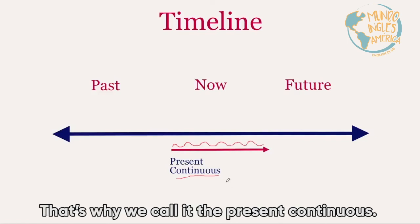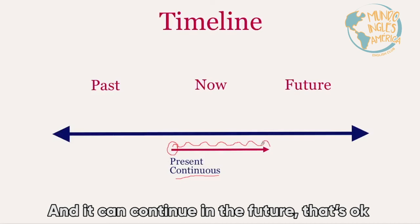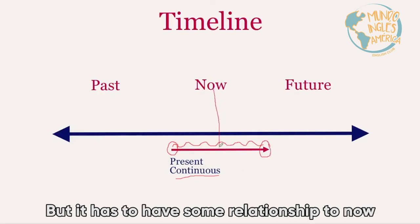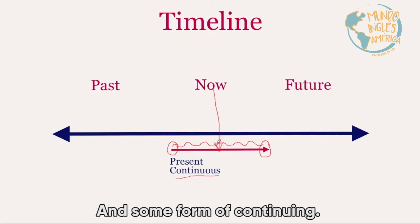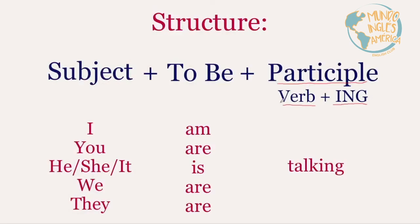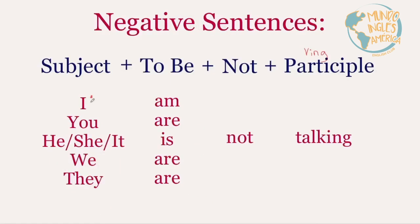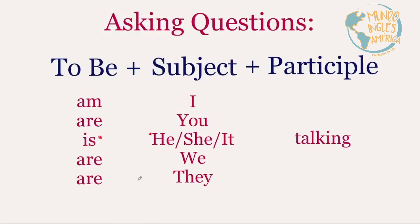Remember, in our timeline the action has to be in progress, so there's some kind of continuation — that's why we call it the present continuous. It could start in the past and continue into the future, that's okay, but it has to have some relationship to now and some form of continuing.